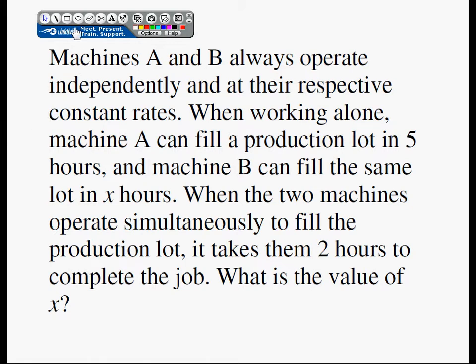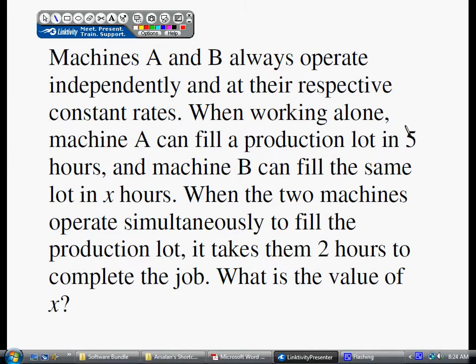We're going to take a look at a visual solution to this problem, and I'm going to start with these two numbers that I have, five and two. Machine A working alone takes five hours to do the job. Machine A and B working together take two hours to do the job. So I'm going to start with a two by five rectangle to represent the entire lot.